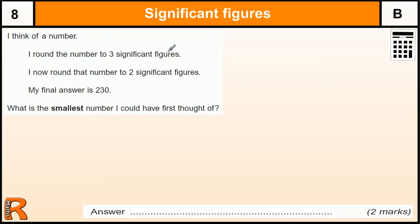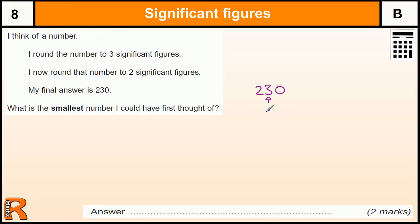You've got a number that's been rounded to three significant figures, then two significant figures, and the final answer is 230. What was the smallest number it could have been? If we start with 230 and work our way backwards — this has been rounded from three significant figures to two significant figures, so we're rounding to the nearest ten — the smallest it could have been was 225, which would round up to 230.